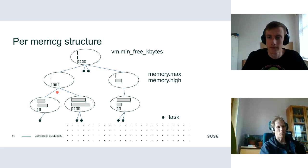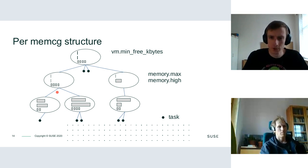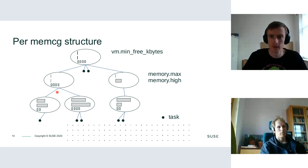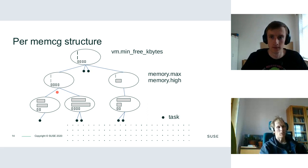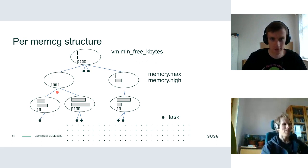Global reclaim is actually something slightly different than recursive reclaim over all cgroups. Global reclaim done by kswapd takes into consideration the system as a whole and not any particular cgroup. In one way you can see it as reclaim of the whole hierarchy under the root cgroup, but in the implementation it's actually different — it uses different constraints, happens from a separate thread, and so on. Because we have separated LRU lists, we need to iterate through all of them to do global reclaim.